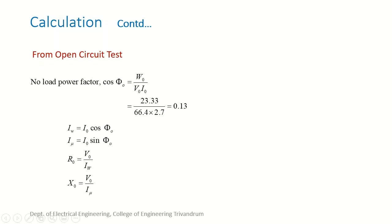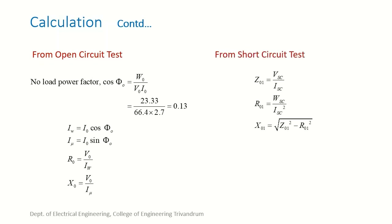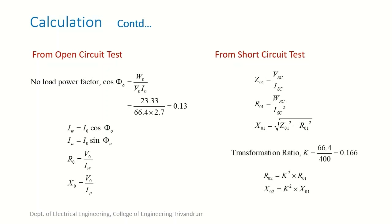From the short circuit test, Z01 is obtained as voltage divided by current, since the experiment is done on the primary side. Correspondingly, the resistance and reactance can be found. Since we are drawing the equivalent circuit referred to the secondary side, we find the transformation ratio and transfer the values to the secondary side. R02 and X02 are then calculated using the appropriate equations.